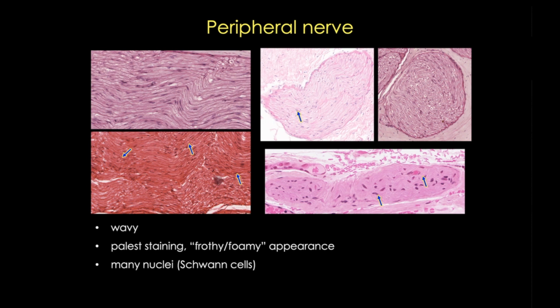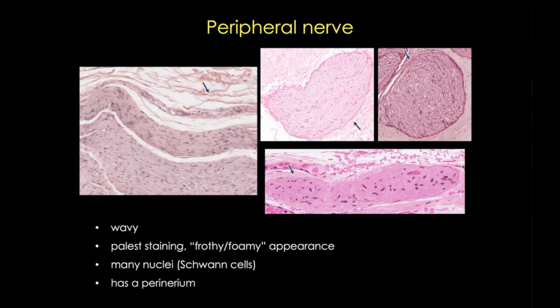In a ganglion where the axons are smaller and unmyelinated, the nuclei are likely to be fibroblasts or other glia. Finally, peripheral nerve has a connective tissue sheath called the perineurium, and this is lacking in smooth muscle and dense irregular connective tissue. Peripheral nerve also has few to no blood vessels.